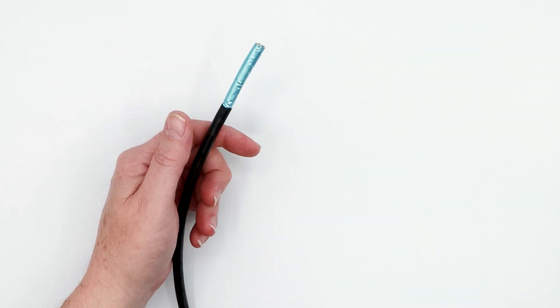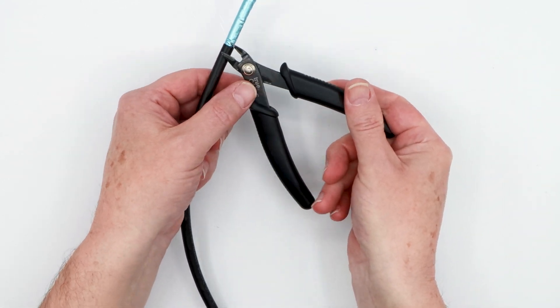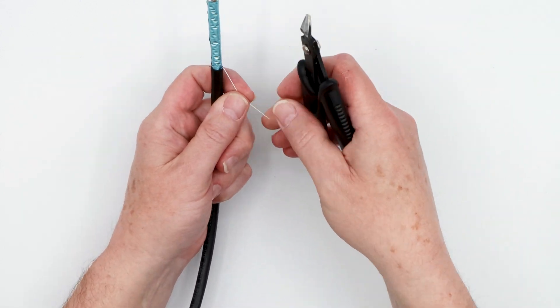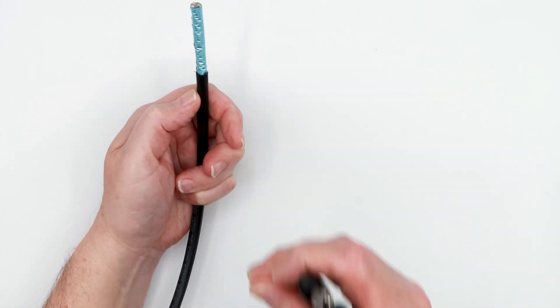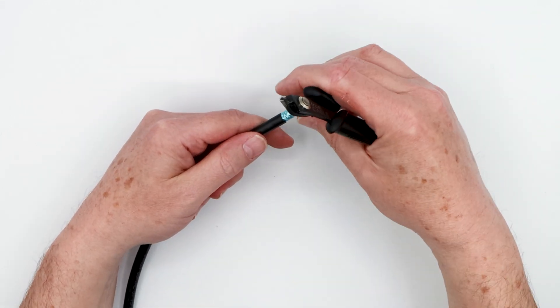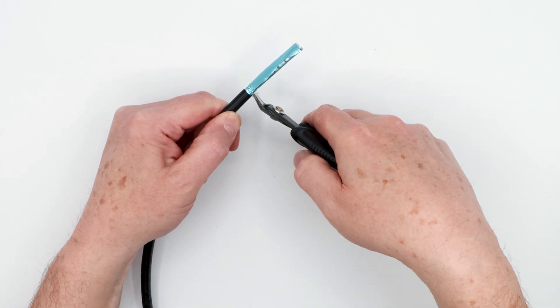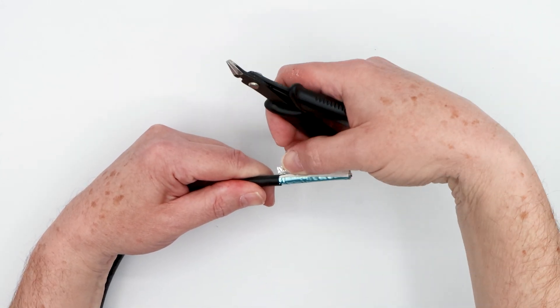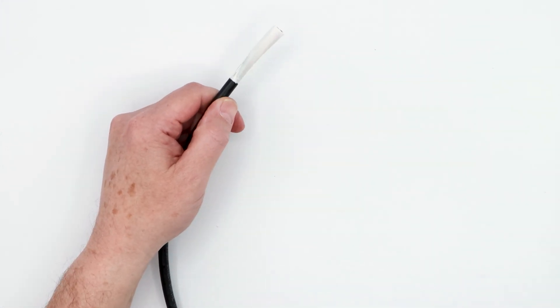The next step is to grab your handy flush cutters and you're going to want to remove this rip cord which we didn't make use of and that can simply be flush cut at the jacket and discard it. Now the cable shield you want to go ahead and remove that too so make a very small nip at the very edge of the jacket and then simply peel it off just like that and you can discard that as well.